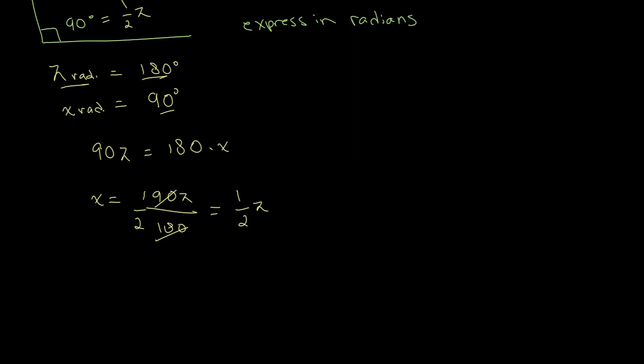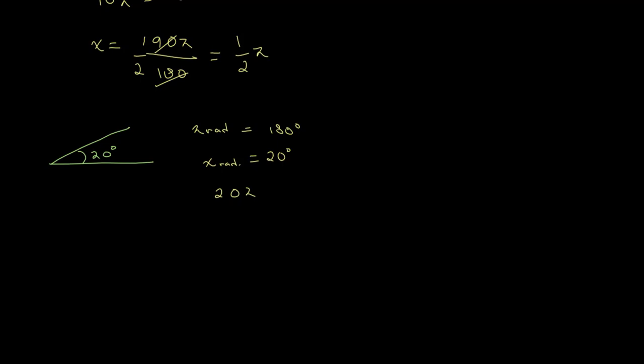Another example we might have is, let's say we're asked to find 20 degrees. So roughly this is 20 degrees, and we have to express this in radians. We follow the same process, pi radians is equal to 180 degrees. 20 degrees is equal to x radians. So we get 20 pi is equal to 180 x, 20 over 180 pi is equal to x, and we get 1 over 9, so 1 over 9 pi is equal to 20 degrees.